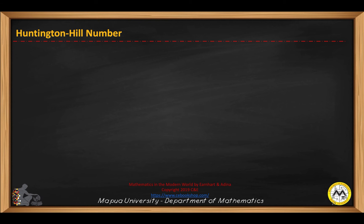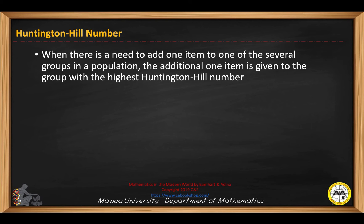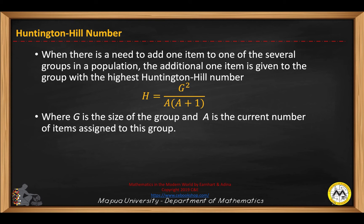Another apportionment method is known as the Huntington-Hill number. When there is a need to add one item to one of several groups in a population, the additional item is given to the group with the highest Huntington-Hill number. This is based on the formula g squared over a times (a plus 1), where g is the size of the group and a is the current number of items assigned to the group.